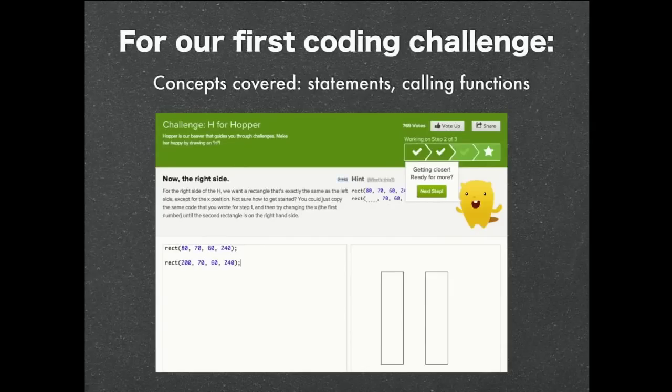We actually have hundreds of thousands of students learning JavaScript on Khan Academy, and we can look at the stats to try and answer questions like this. So we can pose the question: how does age predict the success for a student that learns JavaScript on Khan Academy? We could look at the first coding challenge they ever do, called the H for Hopper challenge. It's a step-by-step challenge where they have to write commands — they're not allowed to copy-paste. They have to figure out the difference between a colon and a semi-colon, and figure out the right numbers to draw three rectangles that form an H for Hopper.